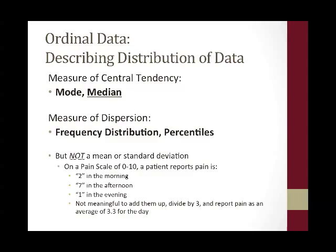Measures of dispersion include frequency distribution and percentiles with ordinal data. You cannot report a mean or standard deviation when you have ordinal data. For example, a pain scale of 0 to 10: if a patient were to report a 2 in the morning, 7 in the afternoon, and a 1 in the evening, it's not meaningful to add them up, divide by 3, and report pain as an average of 3.3 for the day. 3.3 does not correspond with any value on the scale, and therefore it is not meaningful.